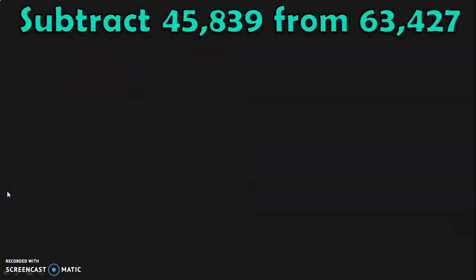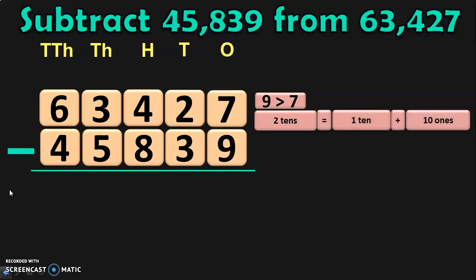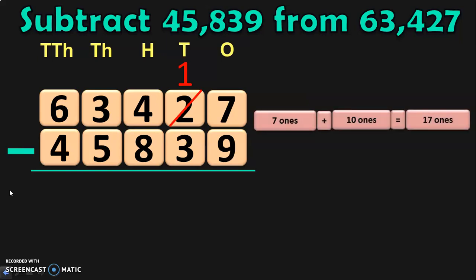The next sum that we are going to do is subtract 45,839 from 63,427. So, write down the numbers one below the other and also write down the place values. Begin the subtraction from the ones place. Here, we have 7 minus 9. We know that 9 is greater than 7. So, regrouping the tens place, you get 2 tens equal to 1 ten plus 10 ones. Retain the 1 ten in the tens place and take the 10 ones to the ones place. In ones place, you already have 7 ones. 7 ones plus 10 ones will give you 17 ones. So, in ones place, now we have 17. 17 minus 9 is 8.